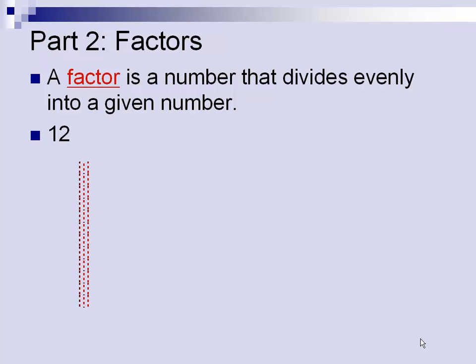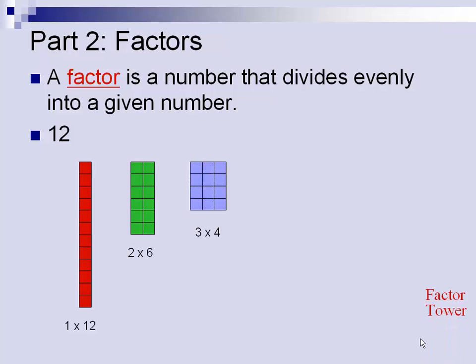For the factors of 12, we're going to use a method called the t-chart or the factor tower. When we look at the number 12, if you see these pictures of the rectangles or the squares, those are factors that can be divided evenly into 12.